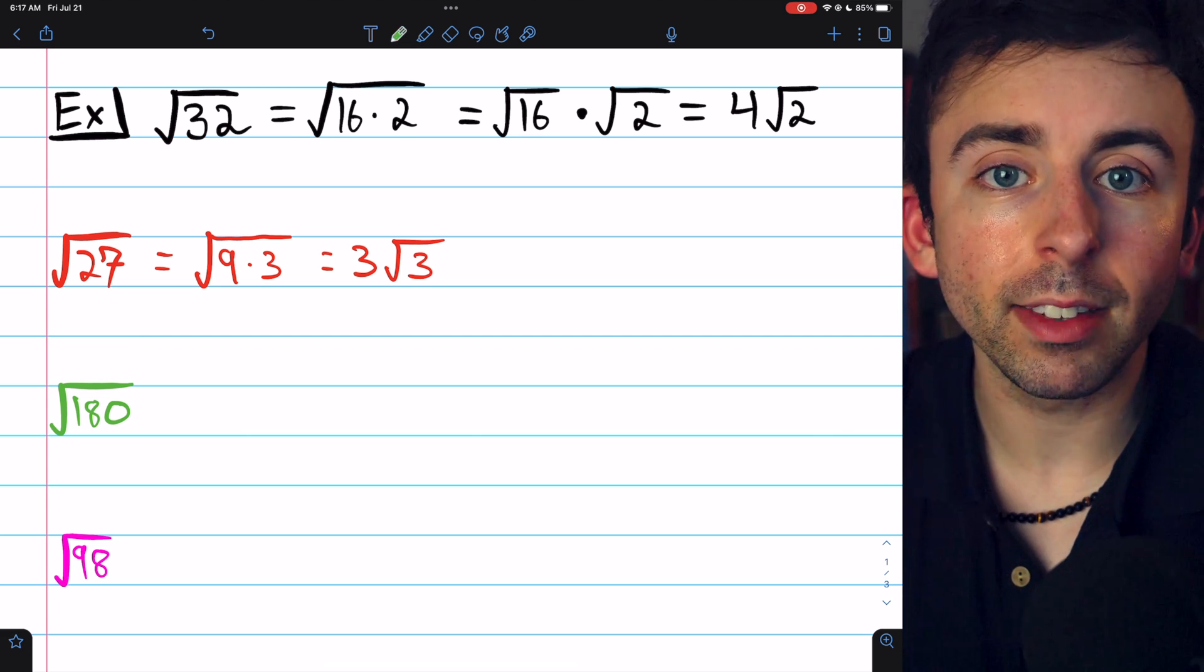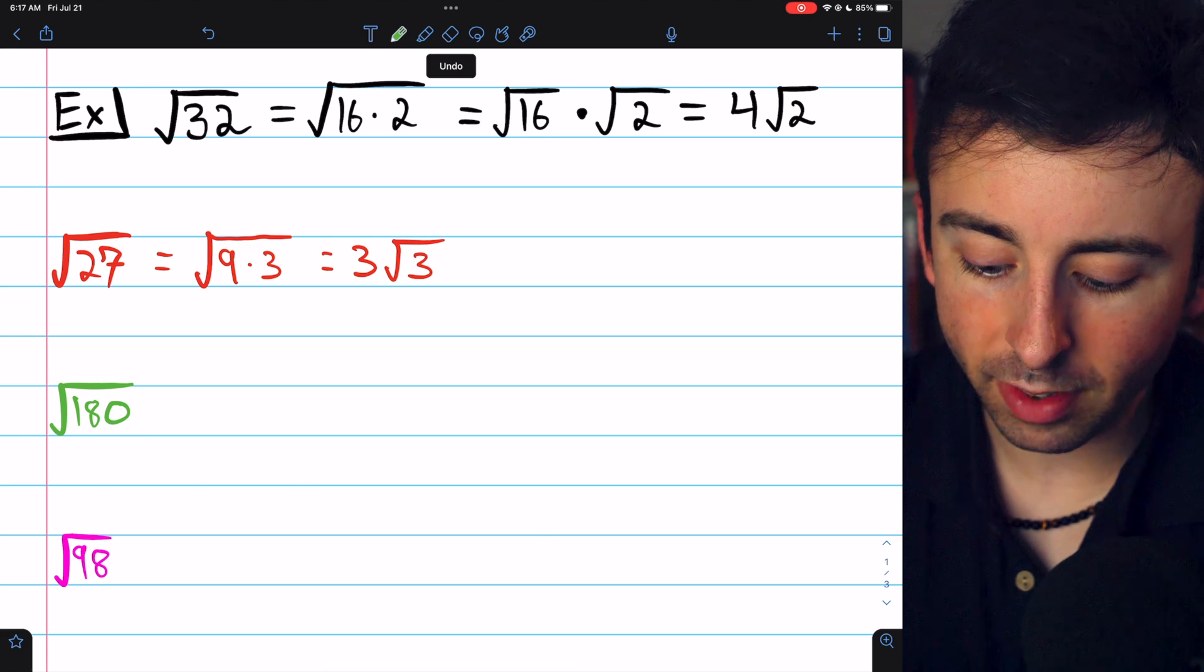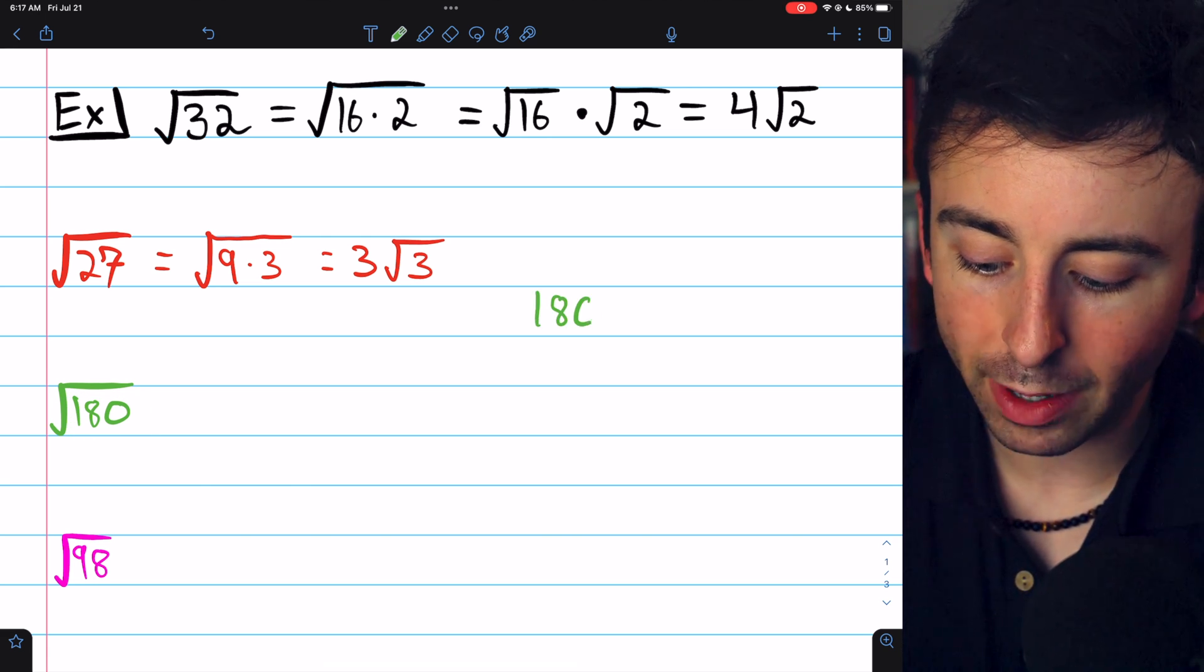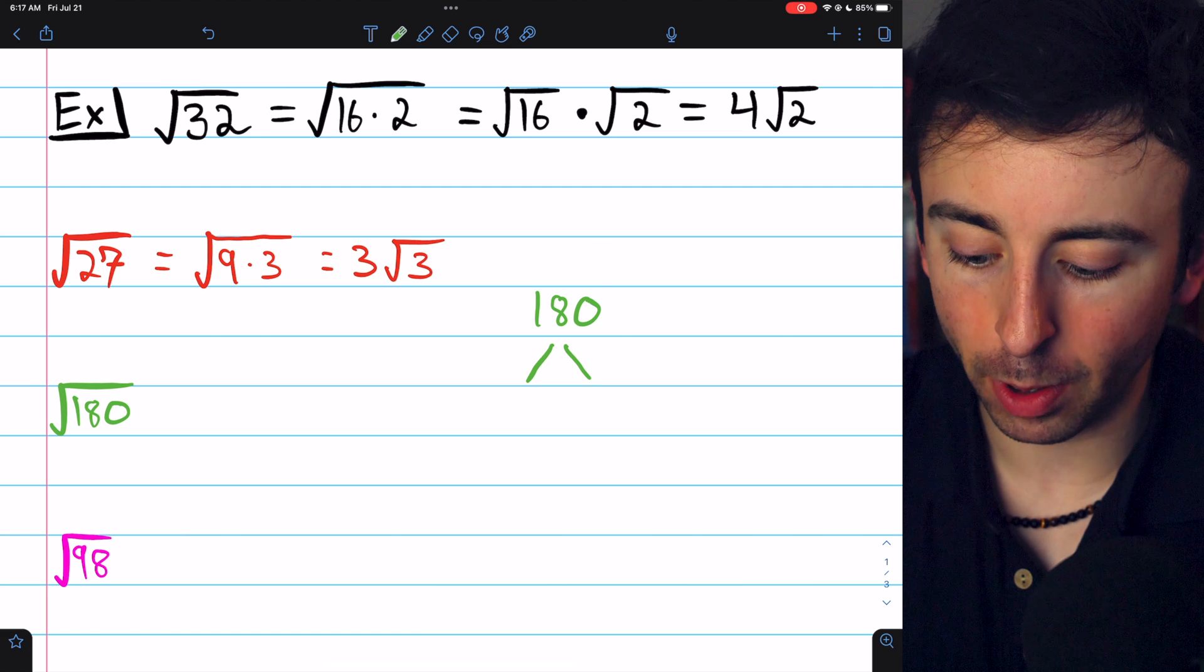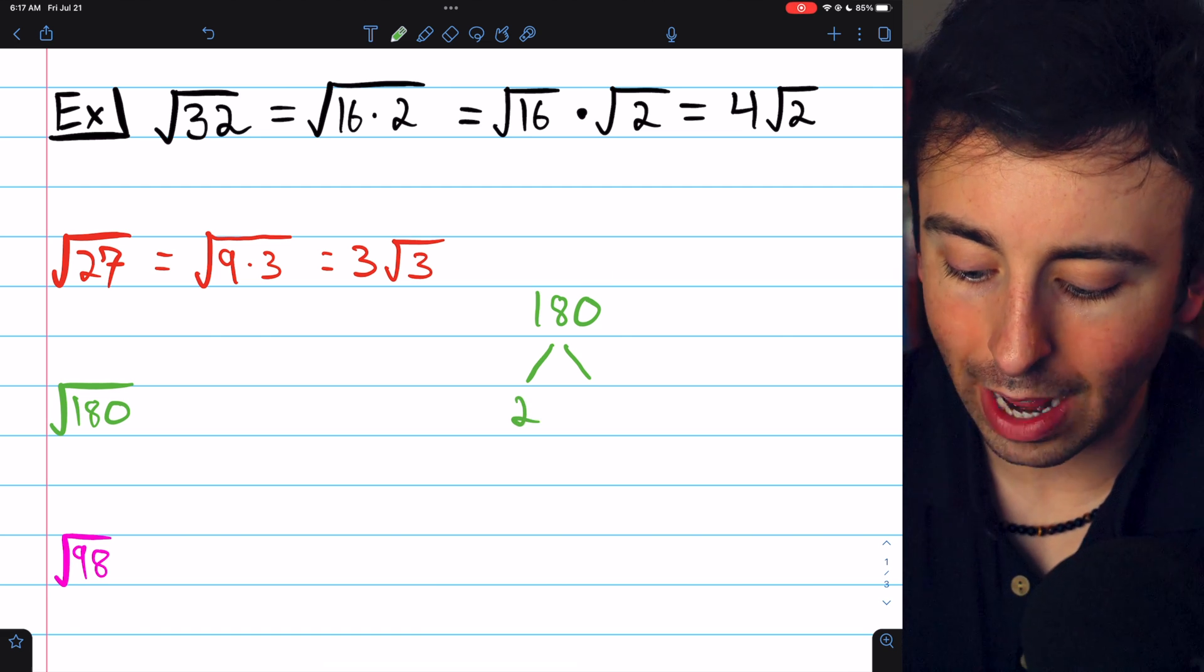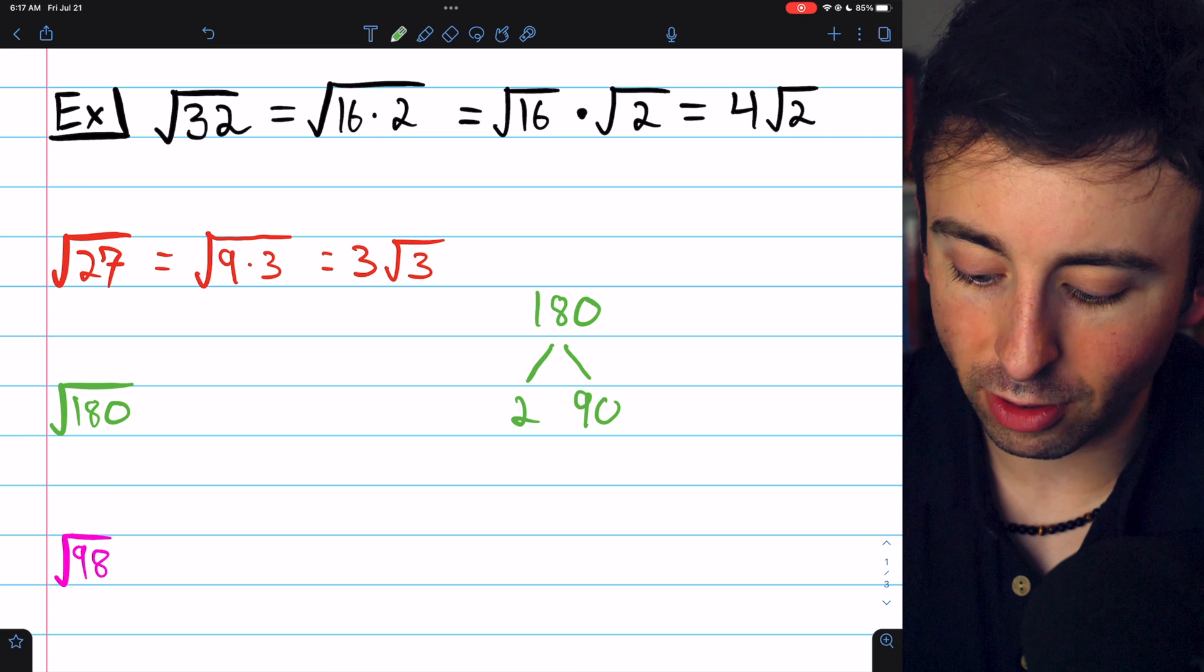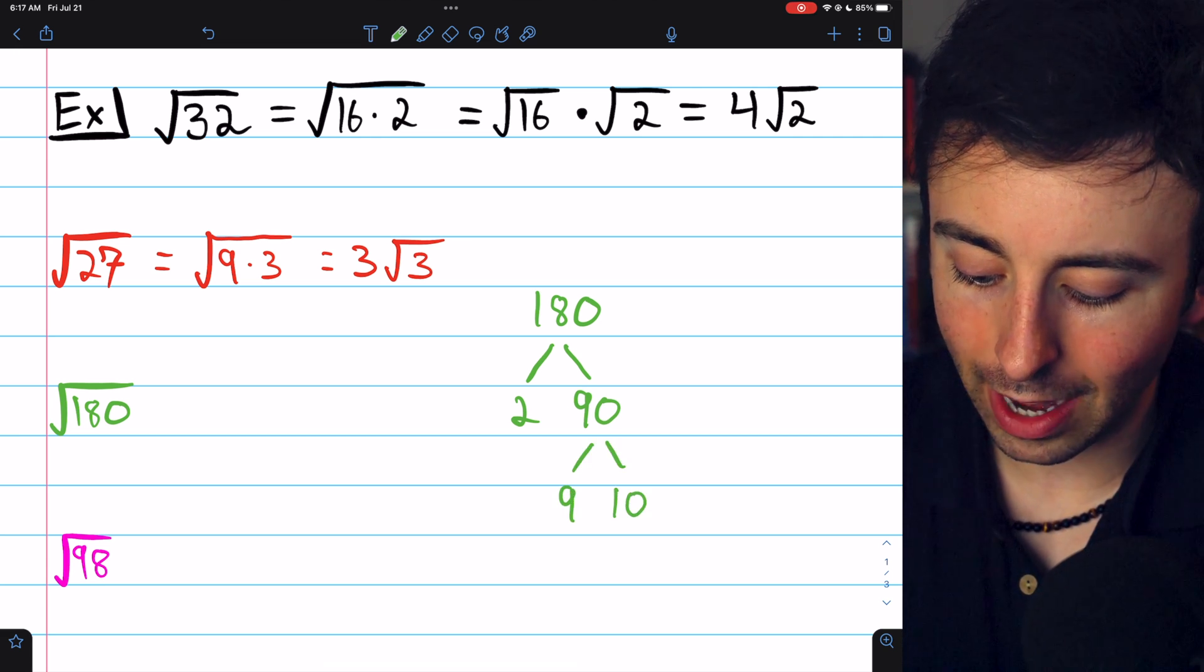It's not always obvious if a square number is a factor of the number in our square root. For example, sometimes we might have to write out a factor tree. Since 180 ends in an even number, 0, we know that it's even, and so we can take a 2 out of it, and 180 is 2 times 90.